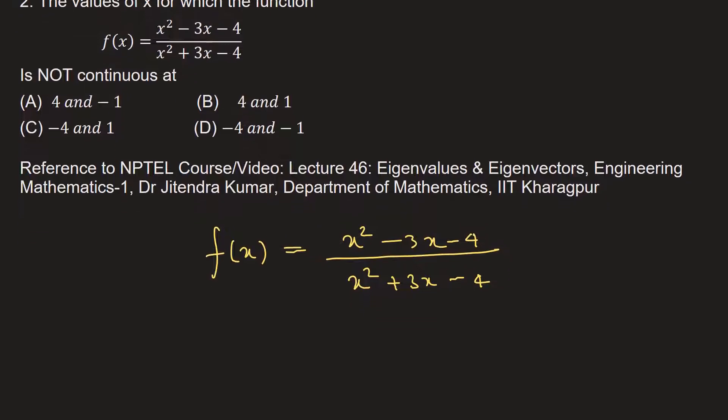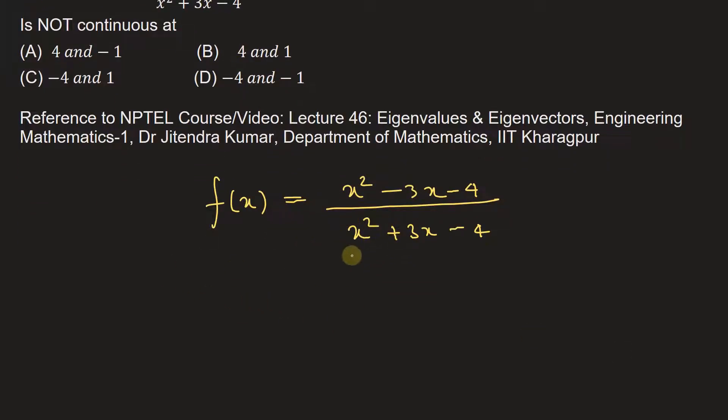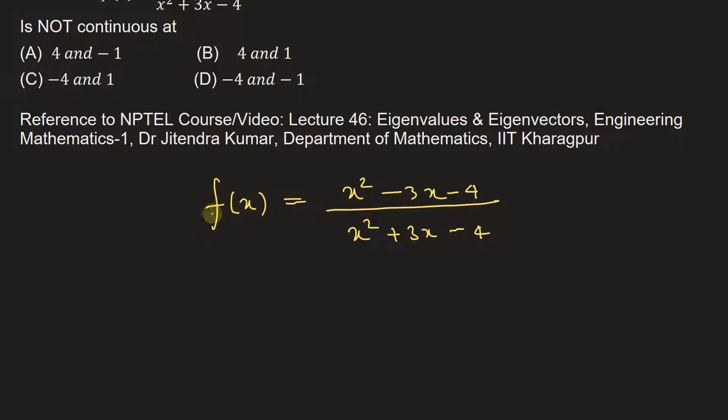Now if we find the domain of this function, that is for all the values of x for which this function f(x) is defined, f(x) can be defined for all values of x except the denominator must not be equal to 0. So x square plus 3x minus 4 must not be equal to 0.